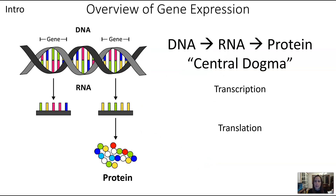The process of going from DNA to RNA to protein is also referred to as the central dogma. This is so critical to understanding biology and genetics that it gets a special name. When we talk about central dogma or gene expression, we're generally referring to DNA to RNA to protein — transcription and translation.